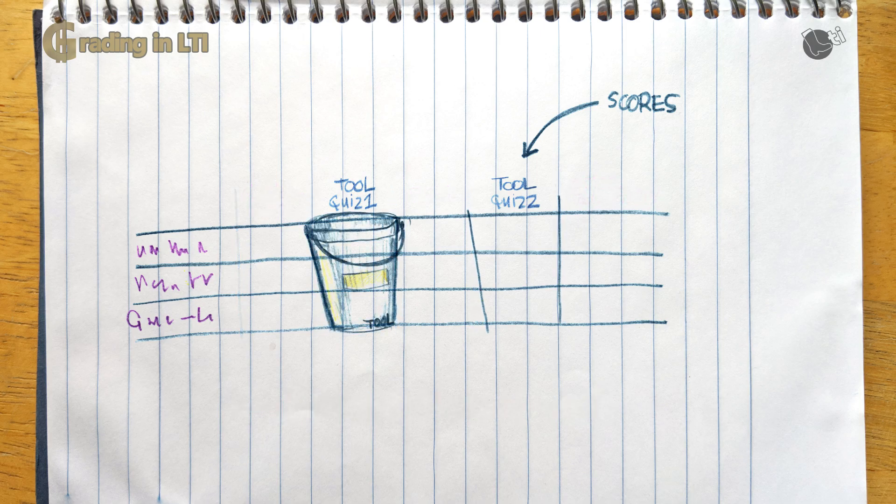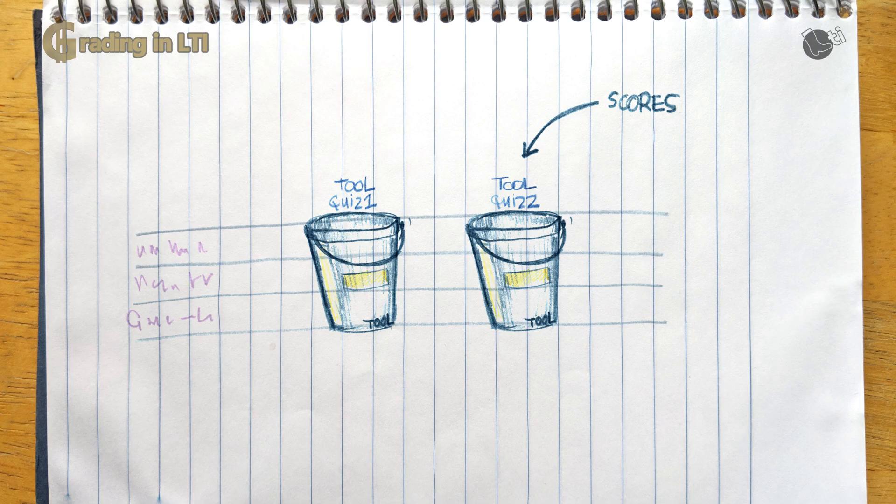So from the tool perspective, the tool can access or create buckets. In those buckets, it can push score updates. Those buckets, we call them line items. One tool can only see its own bucket. It never has a full gradebook view, only its own stuff.